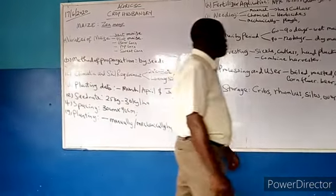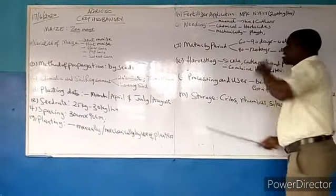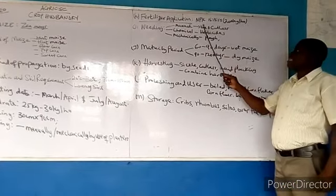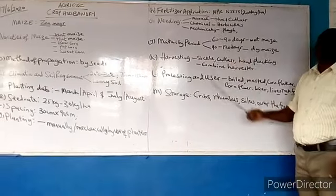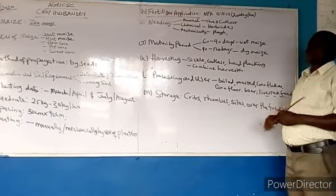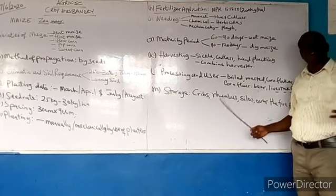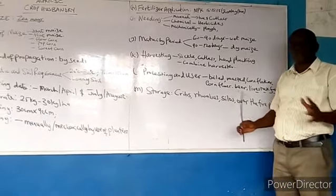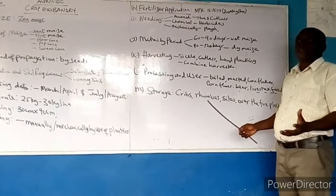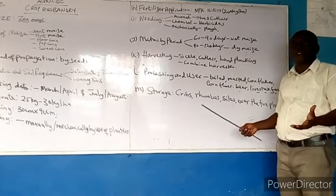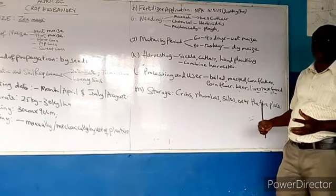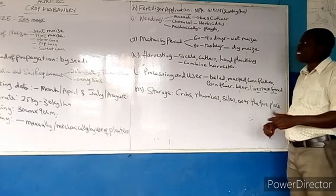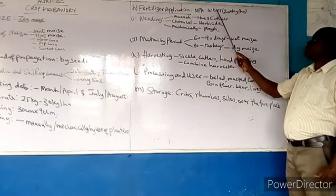Now let's look at fertilizer application. The maize plot can be enriched by use of organic fertilizer, but that is mostly done when the farmland is small or you are doing subsistence or small-scale farming. In large-scale commercial agriculture, inorganic fertilizer is used.